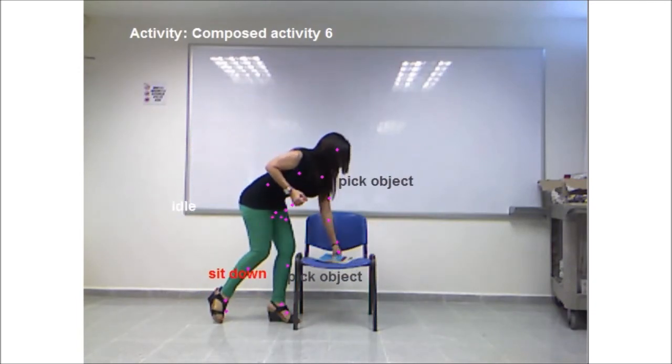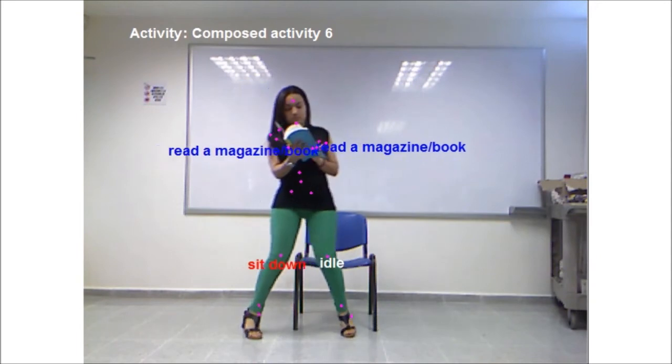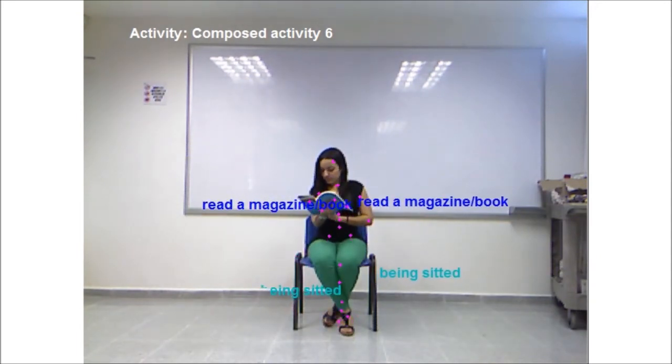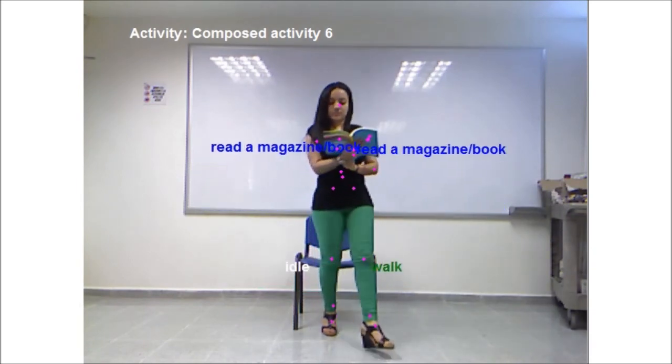Our model infers which actions compose the activity and which body parts are relevant for the actions, given the poses as a by-product. Unlike other models, our outputs are semantically interpretable, and every frame and region is labeled with the action.